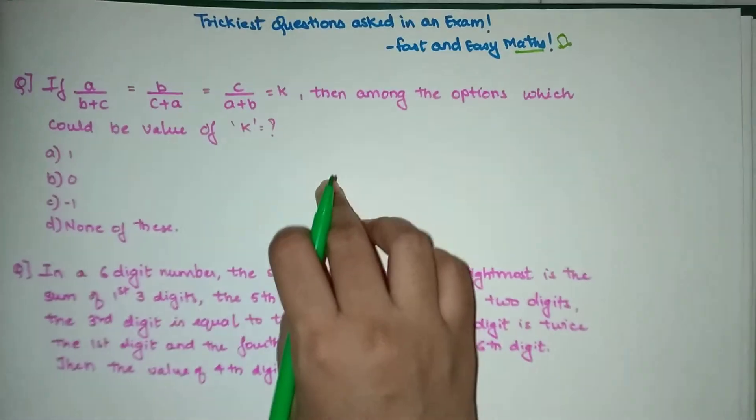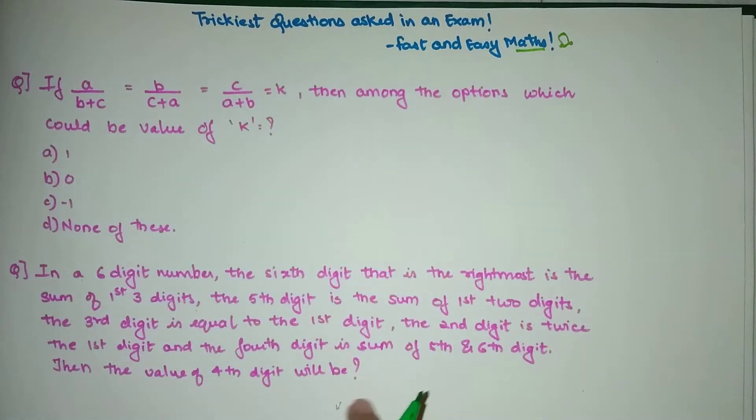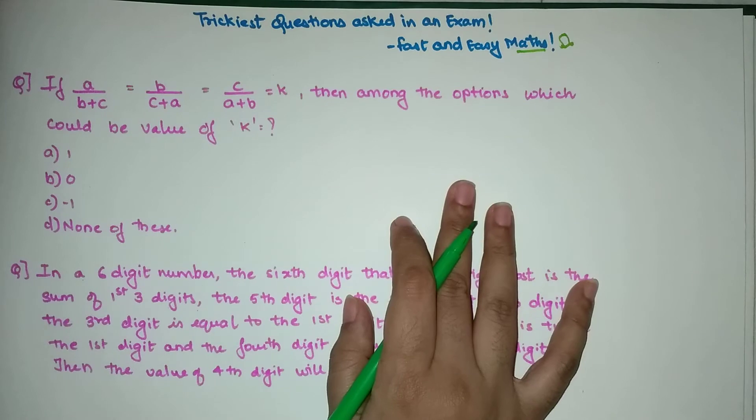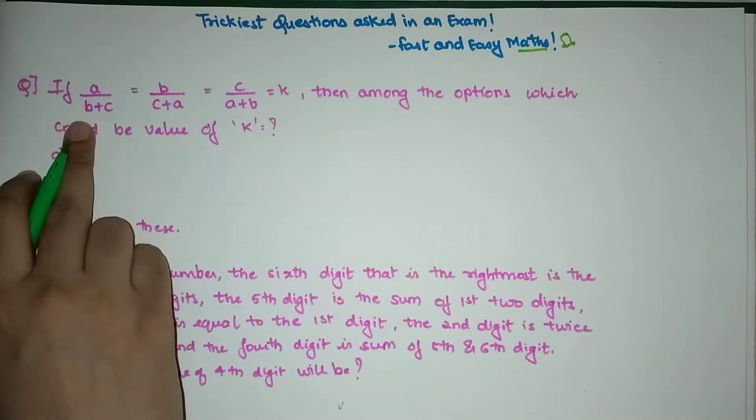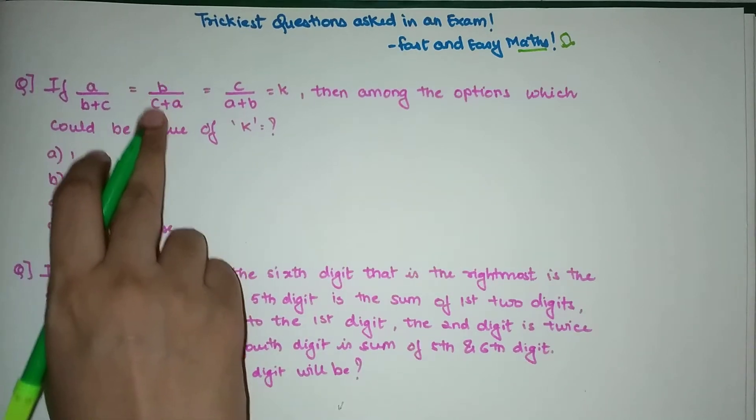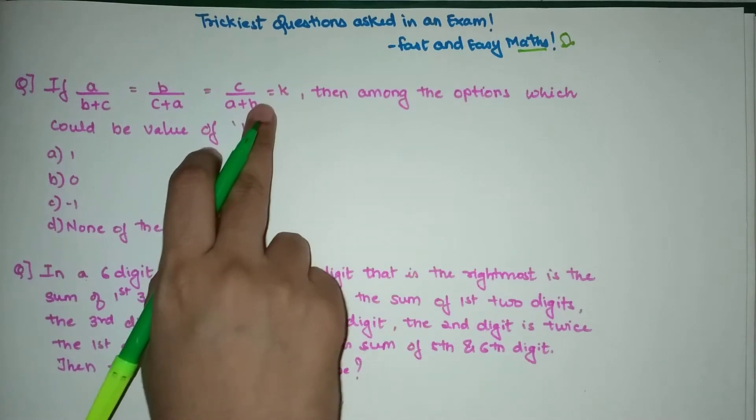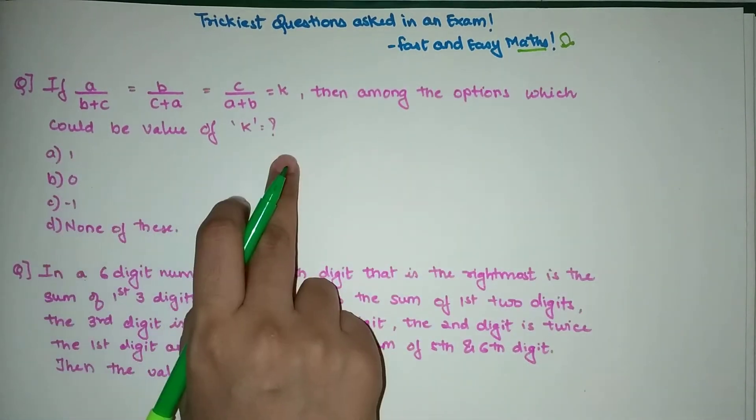Here I will tell you where people made a lot of mistakes. In the second one I realized that a lot of students wasted a lot of time because they could not read the full question properly or rather didn't read the full question. That is the issue. Let's start with the first question. If A/(B+C) = B/(C+A) = C/(A+B) = K, then among the options which could be the value of K?